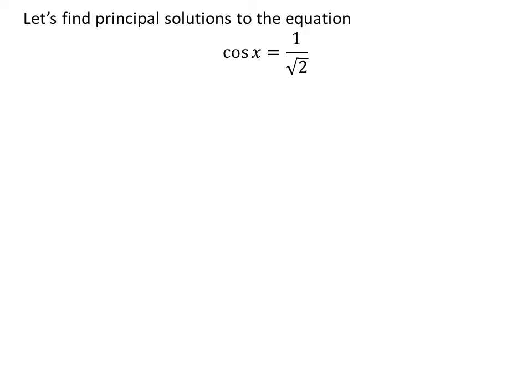The solutions to the trigonometric equation for which x is greater than or equal to 0 and less than 2 times pi are called the principal solutions.